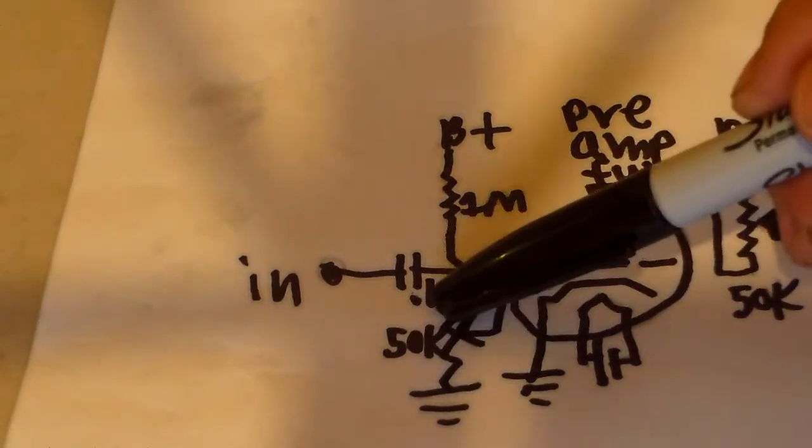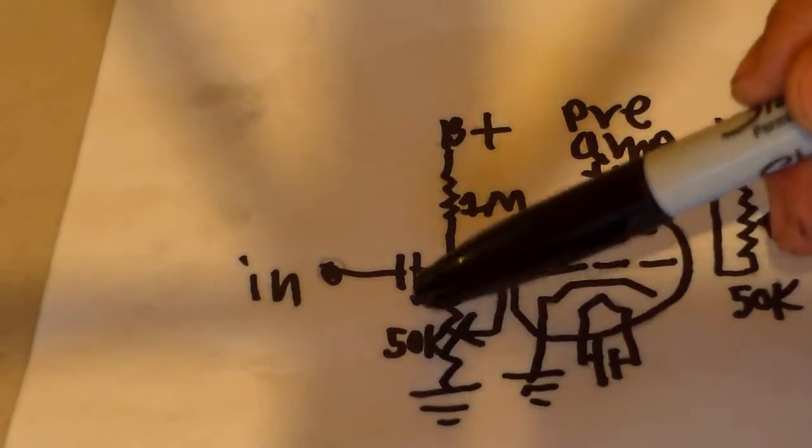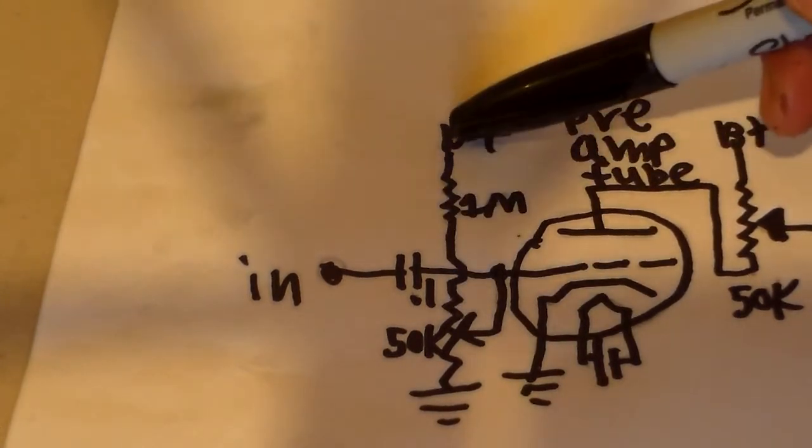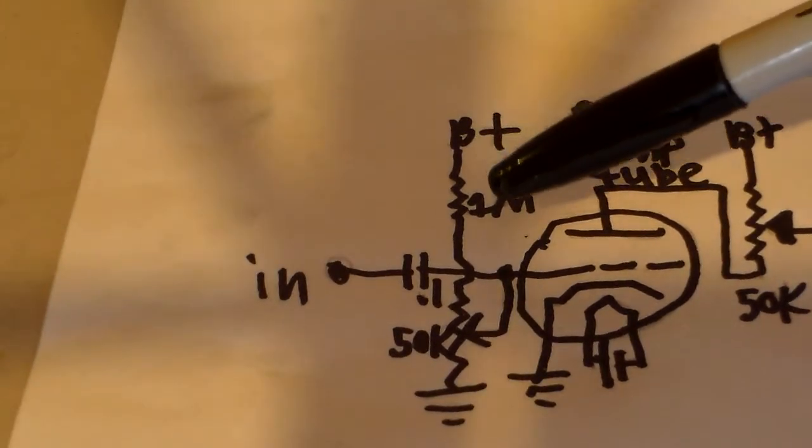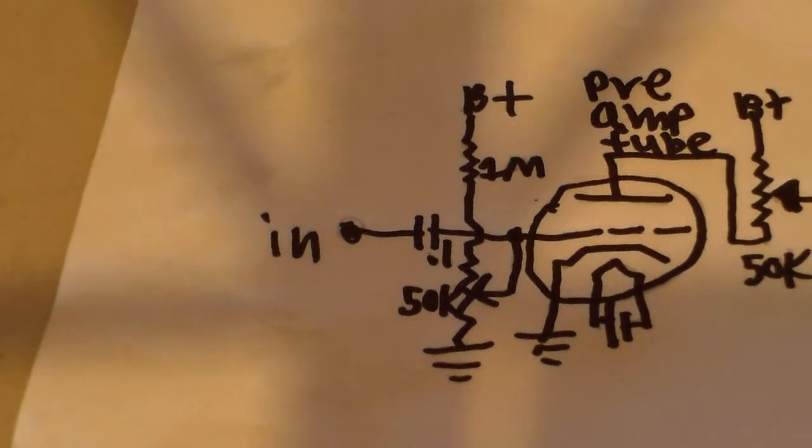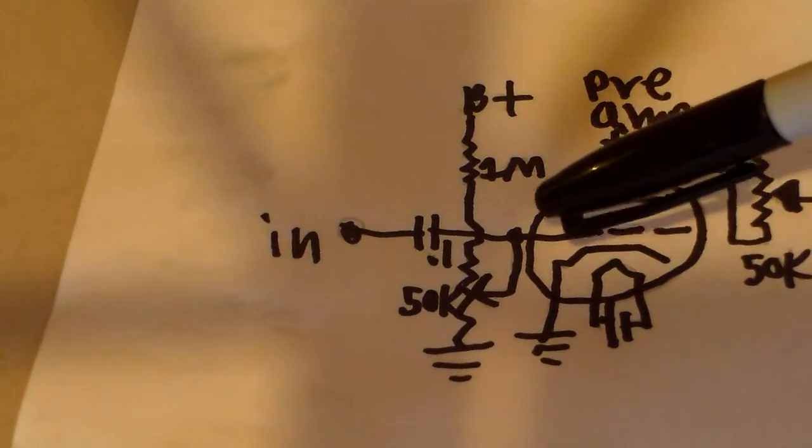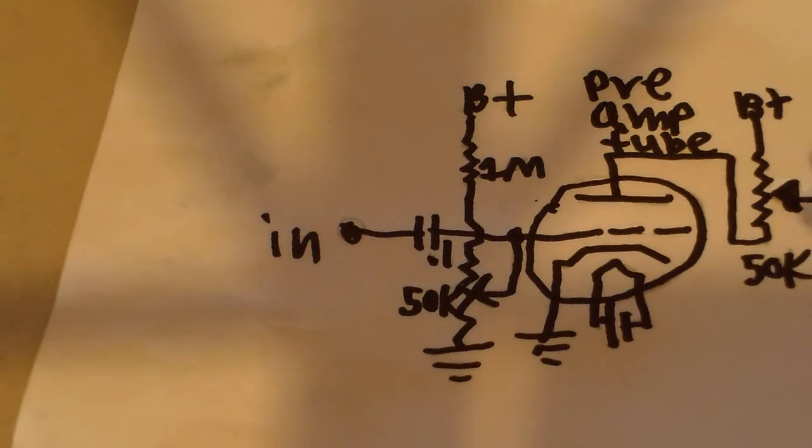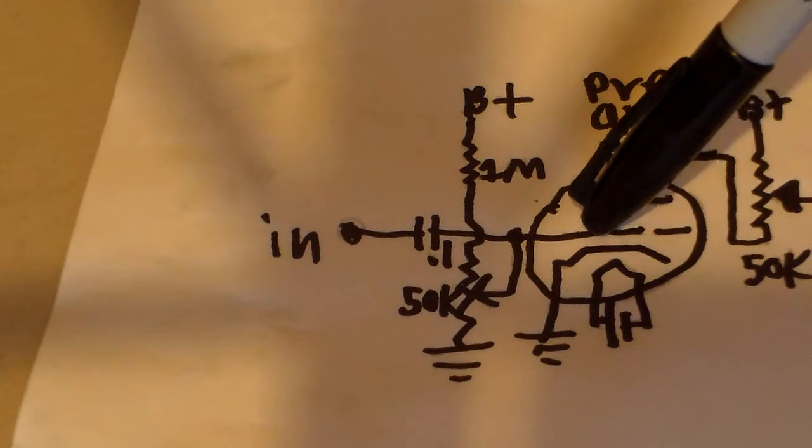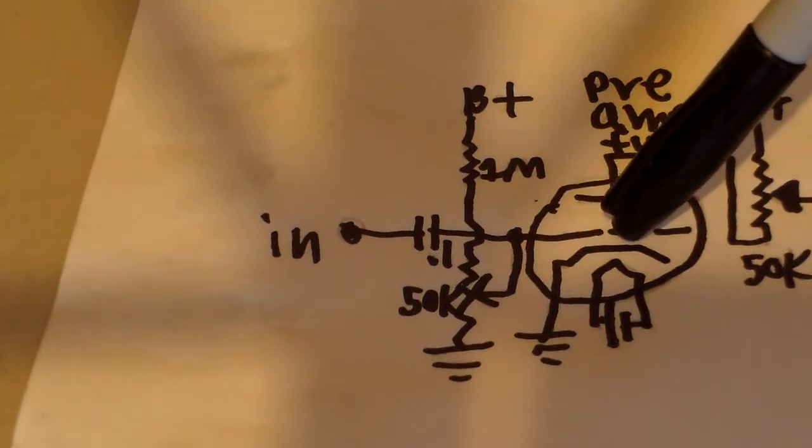And for right here we have a 50k ohm potentiometer, one end goes to ground, the sweeper goes to the grid, and the other end goes to a 1 mega ohm resistor to B+. And I found out that that gives about 0 to 12 volts with a 300 volt source. And I just basically, I just used that in my last few videos to, I could adjust that and get the tube to where this was at the right potential to operate at a good level.